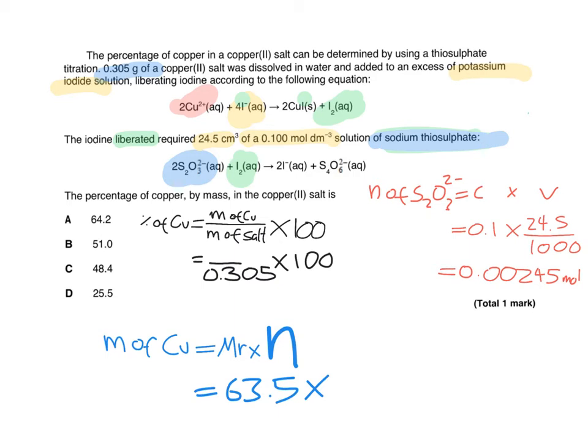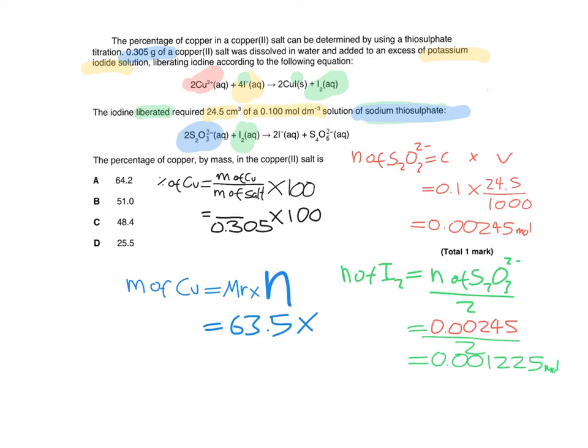We've got the moles of the thiosulfate, so we can use that to work out the moles of the iodine, because we can see the ratio of 2 to 1. So we can see that the moles of I₂ equals the moles of S₂O₃²⁻ divided by 2. Technically, you divide by 2 times by 1, but timesing by 1 is not important. So if we divide this number by 2, we get 0.001225 moles of iodine. That's the moles of iodine that was there, so that must have been the moles that was created. When you're going between equations, you don't use ratios, because if that's the moles of iodine that was there, that is the moles of iodine that was created. This is the moles, 0.001225 of iodine that was created.